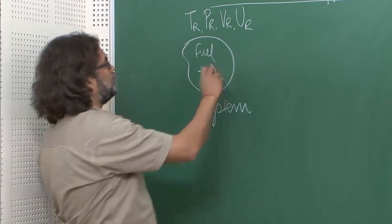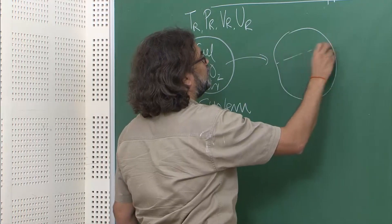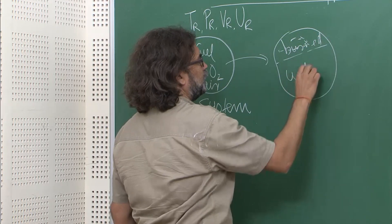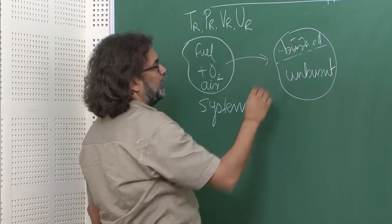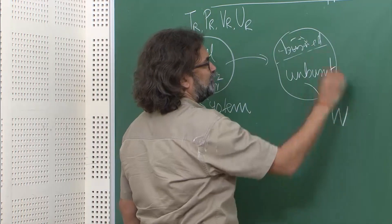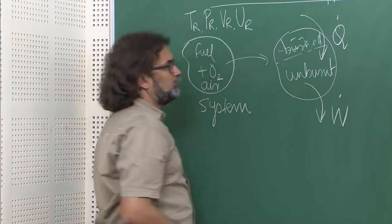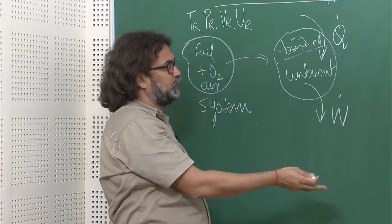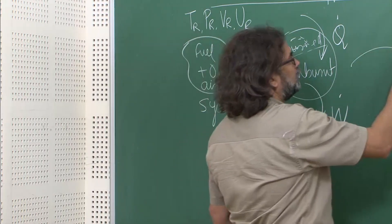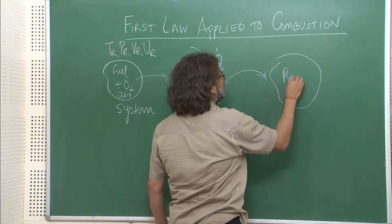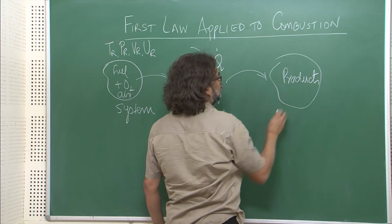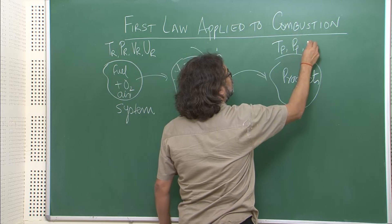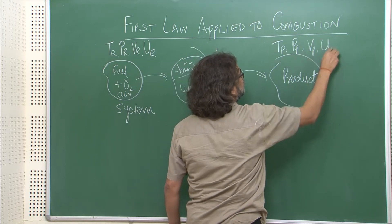Now we will do the combustion reaction. Let us say combustion takes place — this is the burnt region and this is the unburnt. There may be some work interaction and some heat interaction. Heat transfer can take place from the system to the surroundings, some work can come out, and eventually you will end up with some products with temperature Tp, pressure Pp, volume Vp, and internal energy Up.